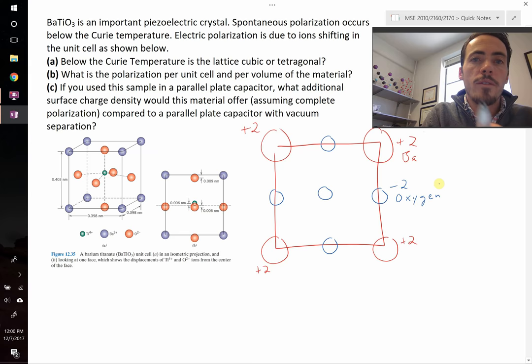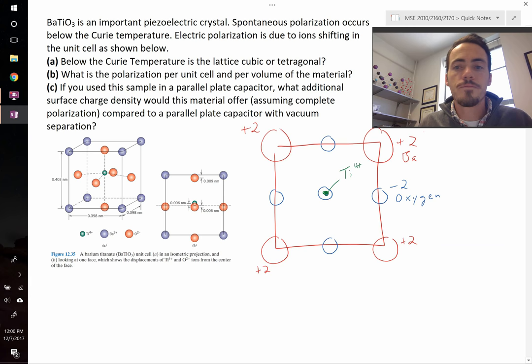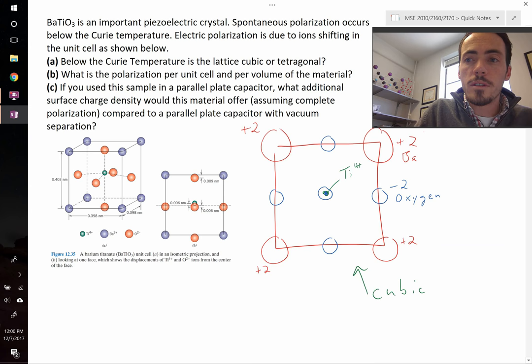And then last, we have the B-site cation, in this case it's titanium. That's going to be located in the dead center. So our B, that's titanium, and it's 4 plus. So if you look at this, everything is centered. There's no shifting of the ions. They're at their exact positions. So this must be cubic, obviously, and it must be above the Curie temperature.